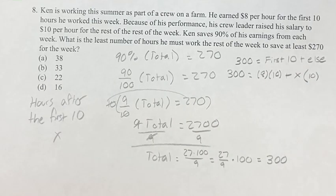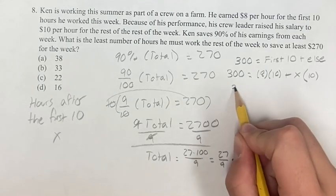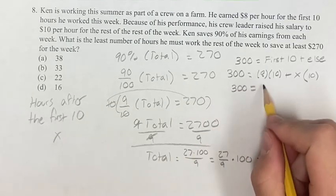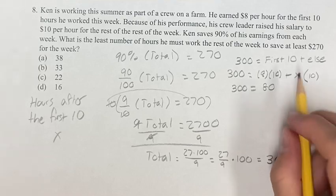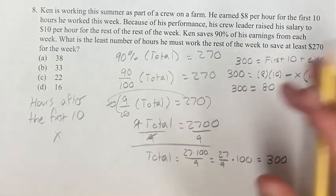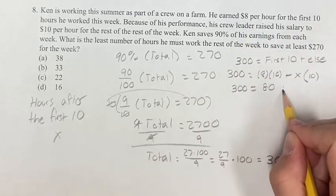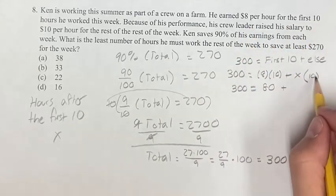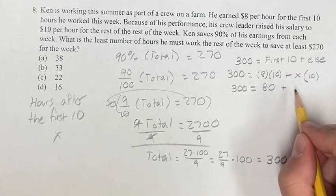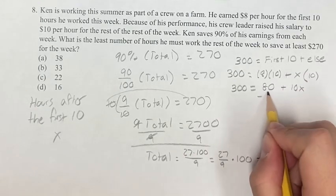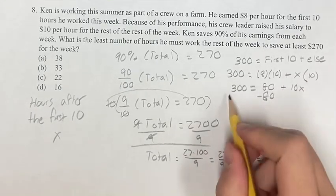So we have 300 is equal to 80 plus 10x. $8 for 10 hours is $80, plus $10 for x hours is 10x. Now we can solve for x.